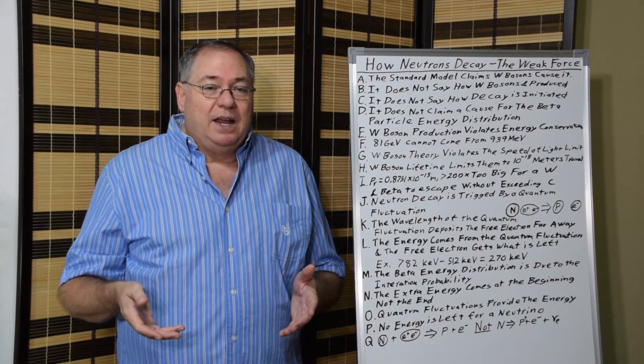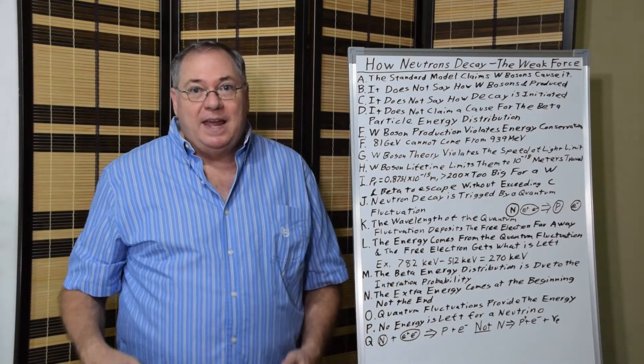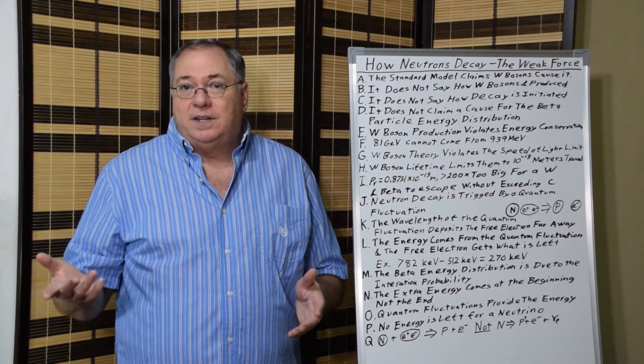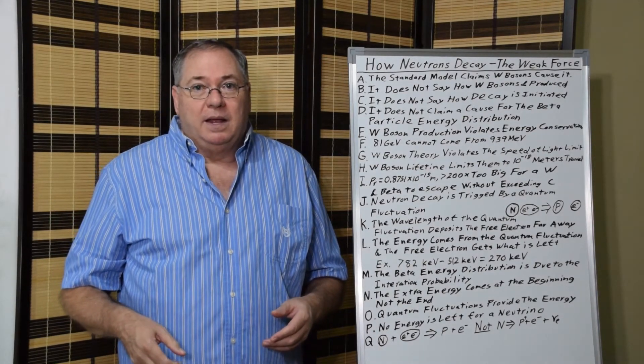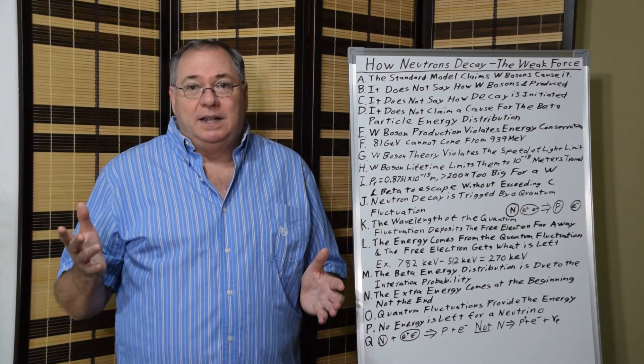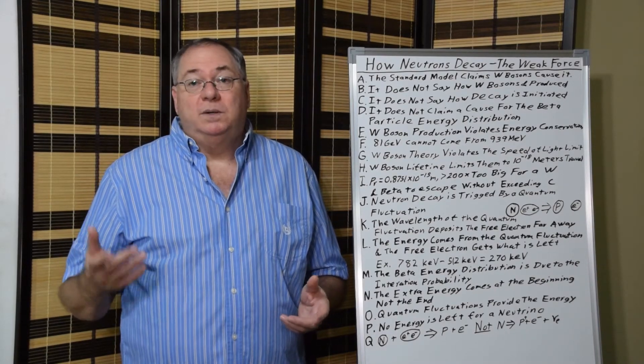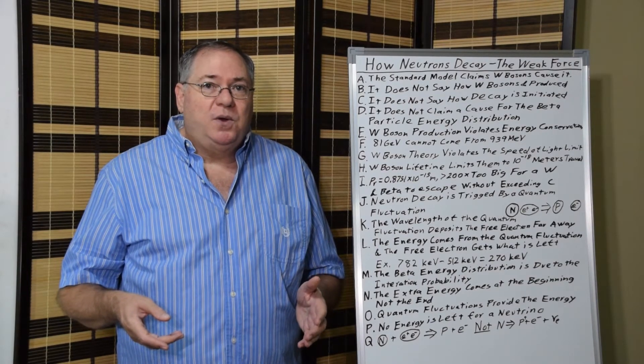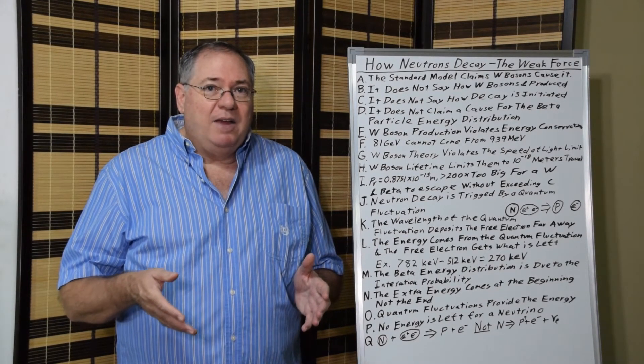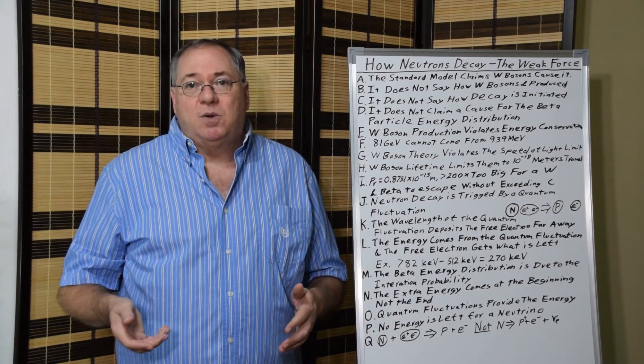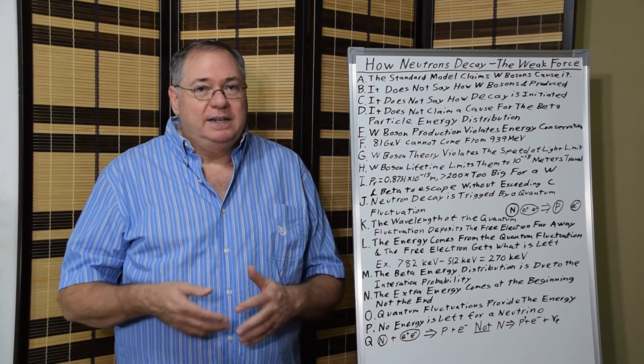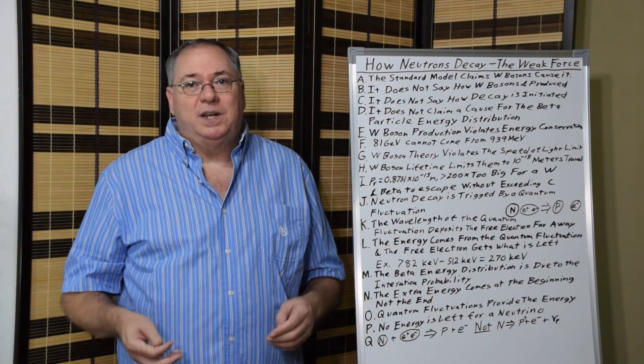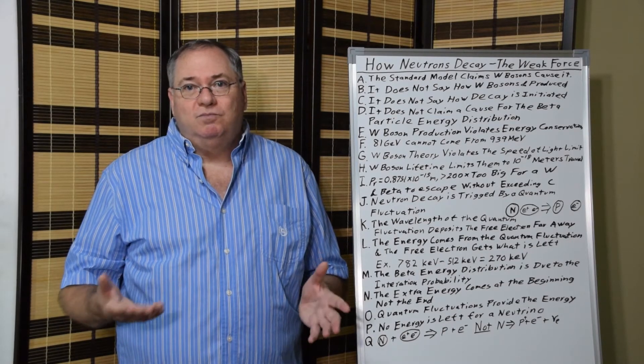Instead, it turns out that when you have quantum fluctuations here, they have a long enough wavelength that the electrons deposited well outside the proton, a hundred times the proton diameter or more, depending on the energy of the quantum fluctuation involved. So, if we consider neutron decay as a quantum fluctuation interaction, it eliminates all the problems with the W-boson model and explains how it really occurs.